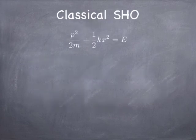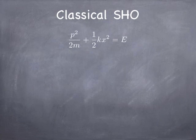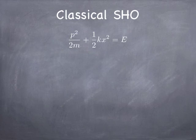Let's talk about the classical simple harmonic oscillator. You already know that the energy is the sum of the kinetic and potential energy. In the infinite square well, the only energy that mattered was kinetic energy. But now we have a potential energy that is finite everywhere and its value depends on position. So now we have a potential that goes like one-half kx squared.